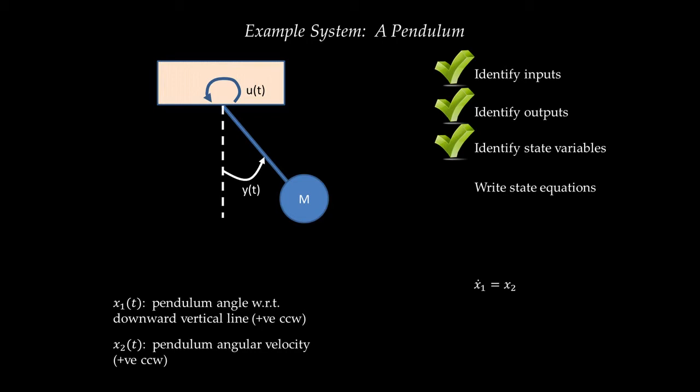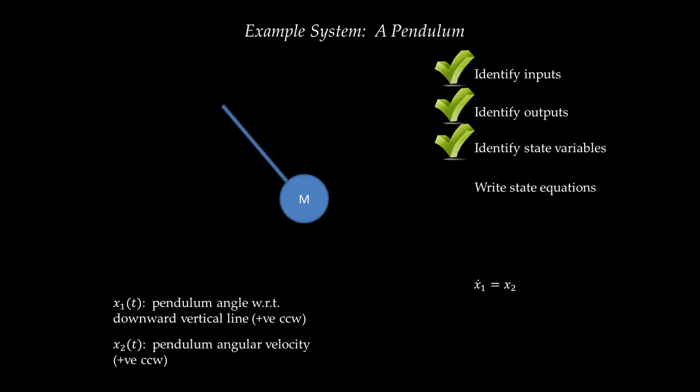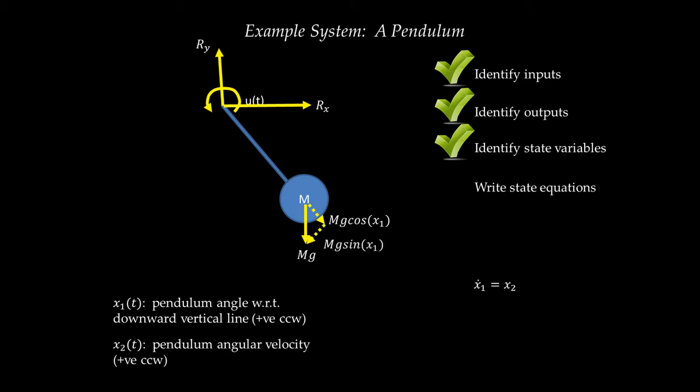To apply the law, we draw a free body diagram. I remove everything but the pendulum and draw the forces and moments acting on it. There is the input torque U of T, reaction forces Rx and Ry from the support, and the force of gravity. Gravity breaks down into a component M·g·cos(θ) along the pendulum axis and a component M·g·sin(θ) perpendicular to it. The hinge point is where Rx and Ry are applied. I take the summation of moments around this hinge point and set it equal to the pendulum's inertia around that point — which is M·L² — multiplied by angular acceleration.